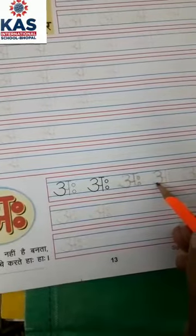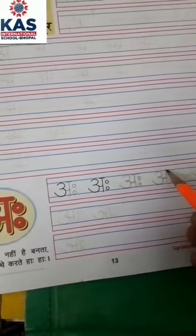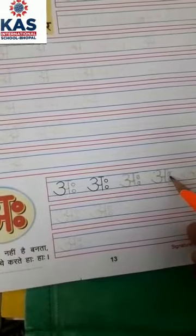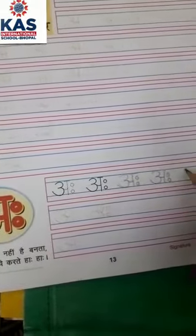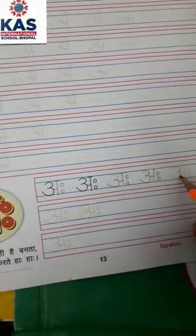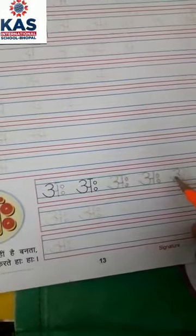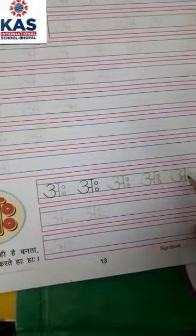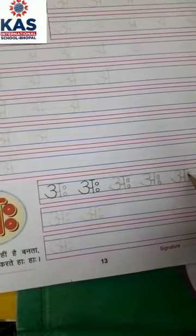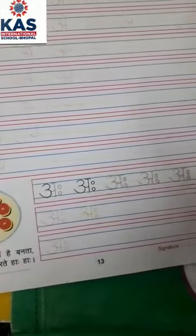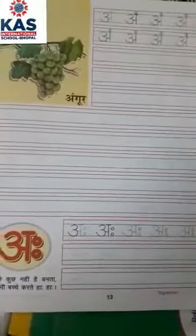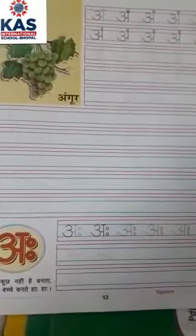Okay students, trace and write Amse Angu. Aha. Kali. Okay students, lai sampai. Amse Angu. Aha. Kali.